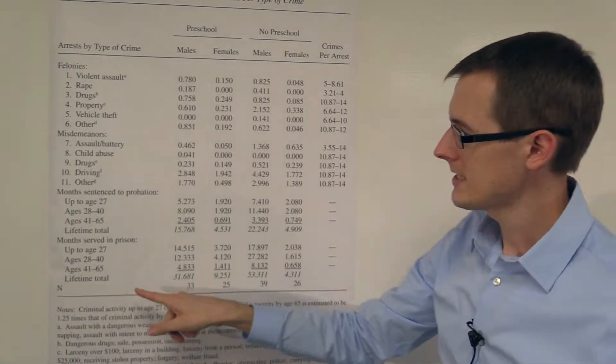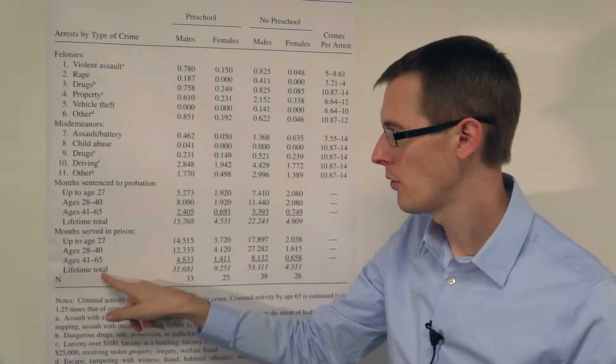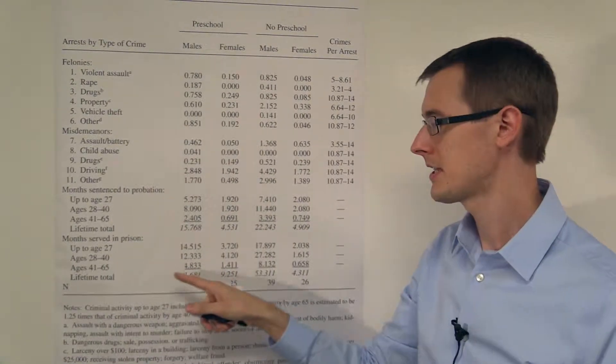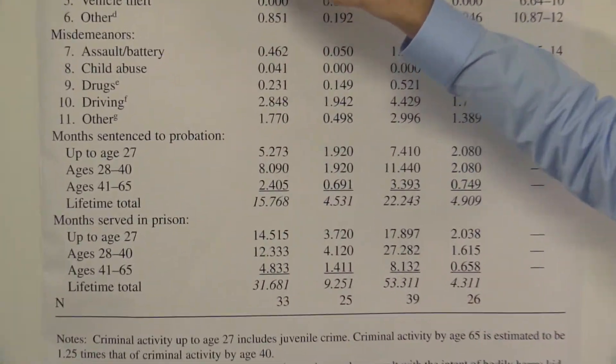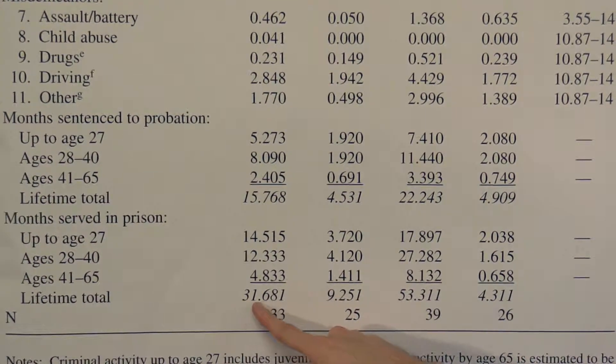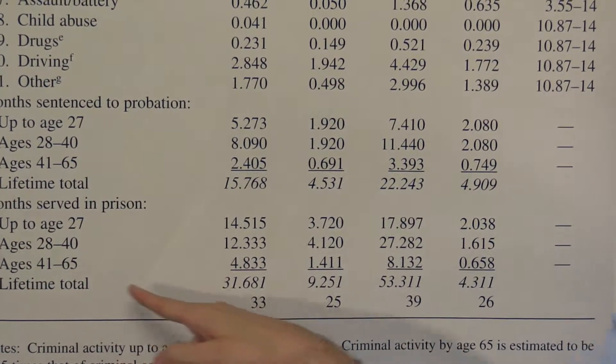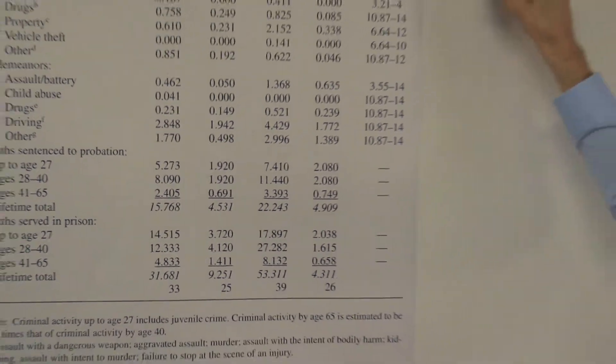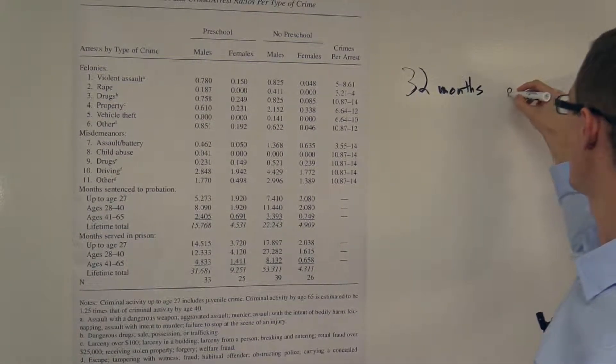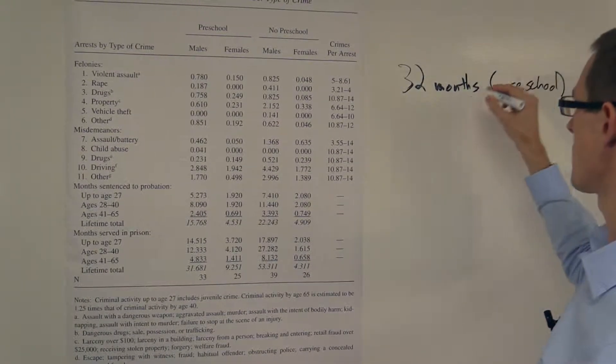So for example, let's compare the effect of going to preschool on the lifetime total number of months you've served in prison for males and for females. Let's start with males. So males who went to preschool got, on average, 32 months served in prison over their whole life. So that's 32 months for preschool. So this is our treatment group.